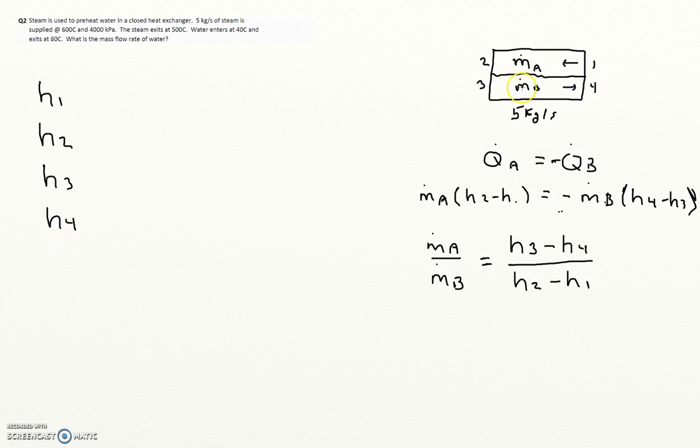So I've set my steam as being my mass flow of B. So what I had is, what was coming in, well it came in at 600 degrees, it left at 500 degrees, so it got colder. On my water side, what happened is it came in at 40 degrees and it left at 80 degrees. It got warmer.